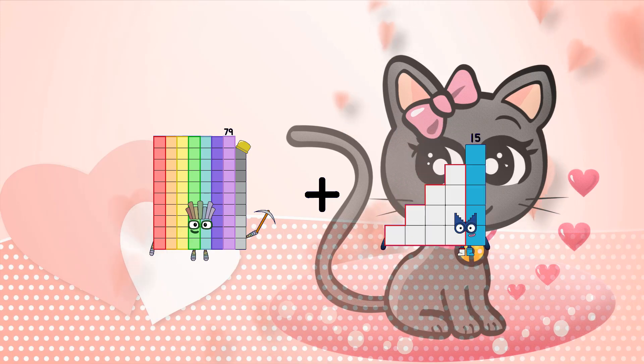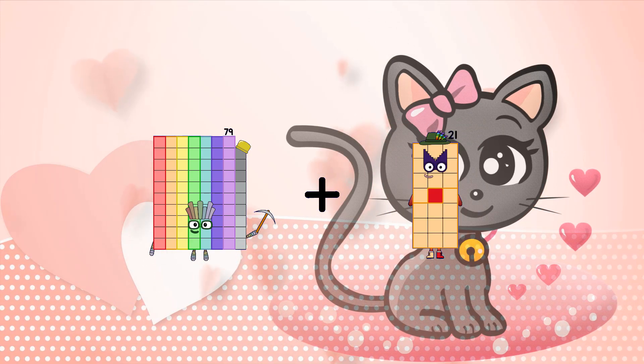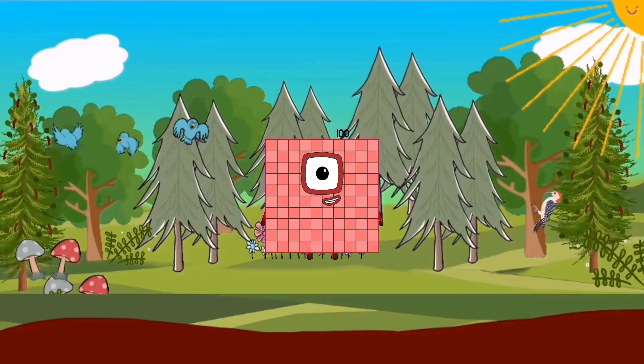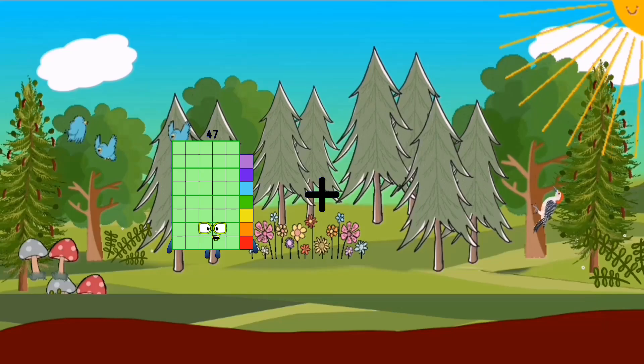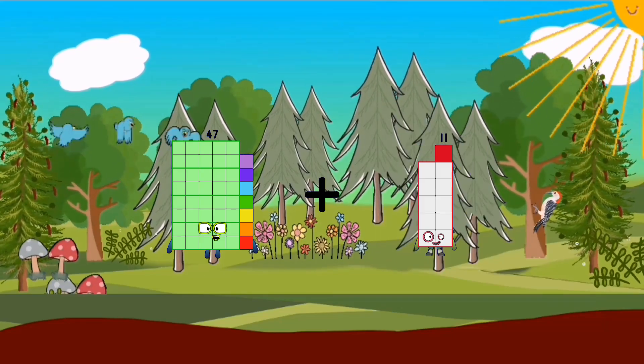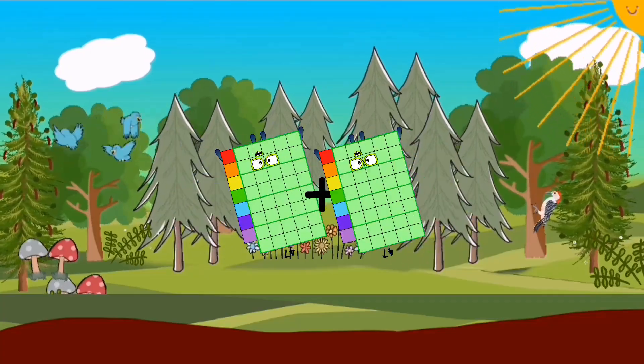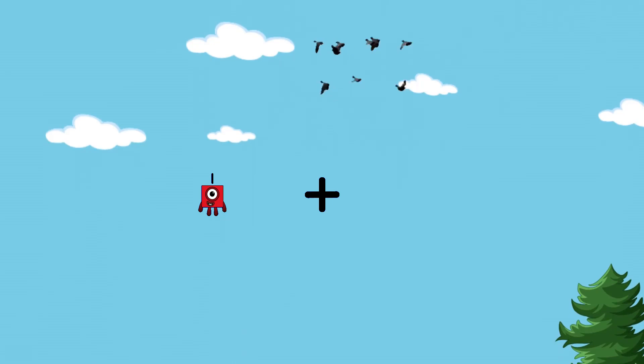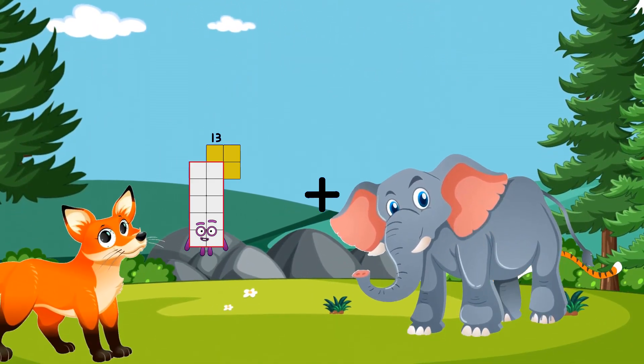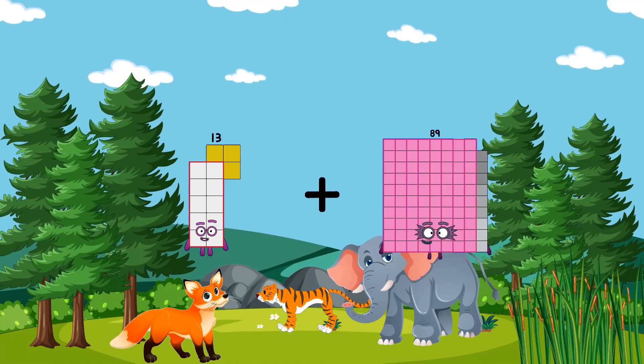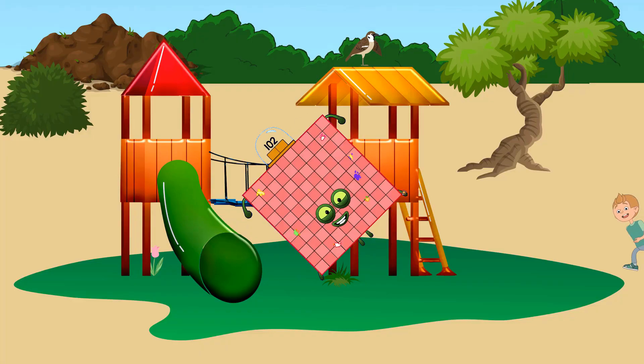79 plus 21 equals 100. 47 plus 47 equals 94. 13 plus 89 equals 102.